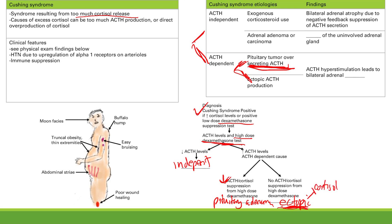That is Cushing syndrome and cortisol function in a nutshell. It's important to recognize the full clinical picture — looking at the symptoms, you can already identify the functions of cortisol and what happens when you have too much of it. That's it for Cushing syndrome.